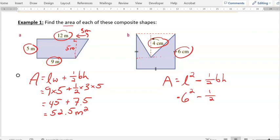We're going to take away one half the base, and we know that if it's a square, that this base is going to be 6 centimeters. One half of 6 times the height, and we're given that as 4.